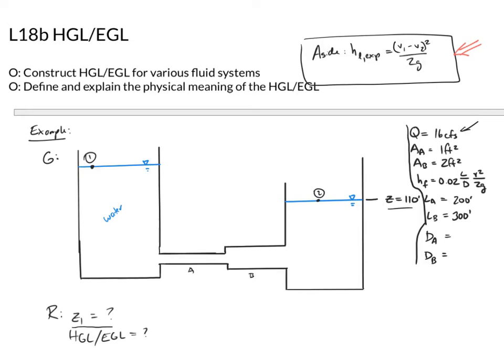The cross-sectional area of pipe A is 1 square foot and pipe B is 2 square feet. We also have friction loss hf along each pipe — hf in pipe A and hf in pipe B — which is a function of length and diameter with a constant of 0.02 out front. The first pipe is 200 feet and the second is 300 feet long.